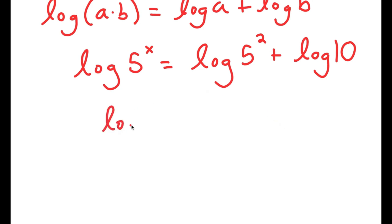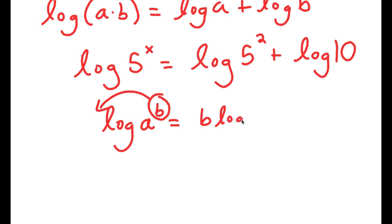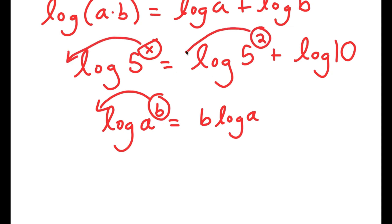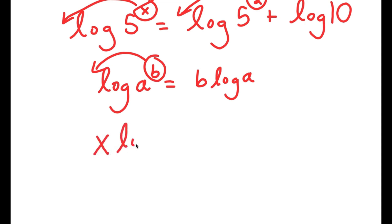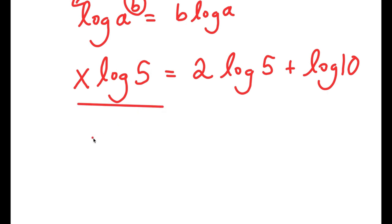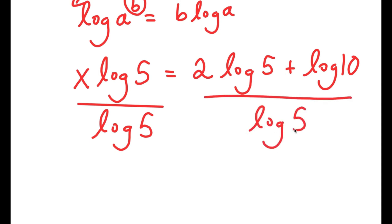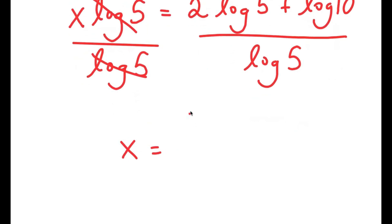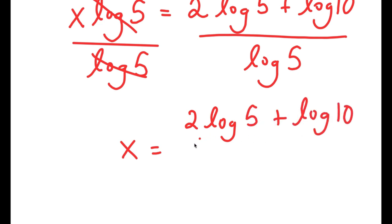Now, if I have something in the form log of a to the power of b, I can move this exponent b to the front, so this equals b times log a. In this case, I have log 5 to the power of x — I can move x to the front — and log 5 to the power of 2 — I can move 2 to the front. So I get x times log of 5 is equal to 2 times log of 5 plus log 10. Then these two log 5 terms allow me to solve for x: x is equal to 2 times log 5 plus log 10, all over log 5.